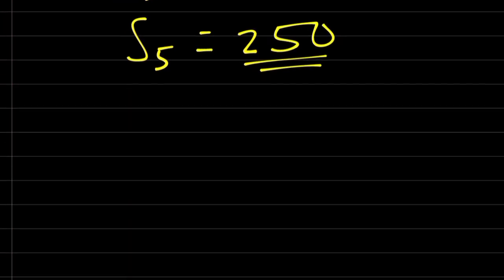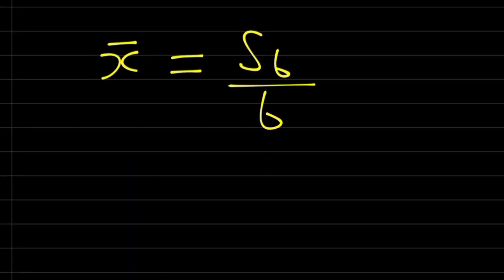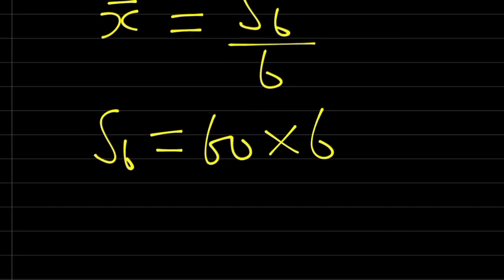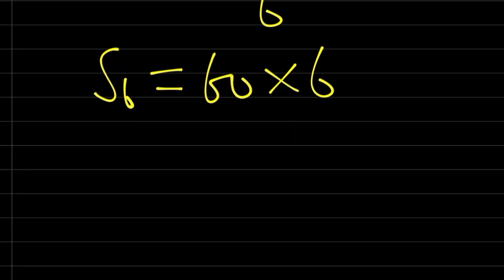And don't forget that the mean of all six numbers is going to be equal to the sum of the six numbers over 6. That means sum of the six numbers is equal to the mean of the six numbers, which is 60, times 6. And the sum of the first five numbers is equal to 250.